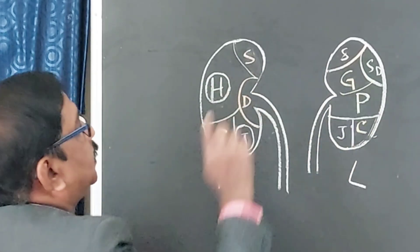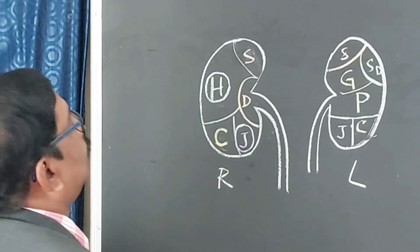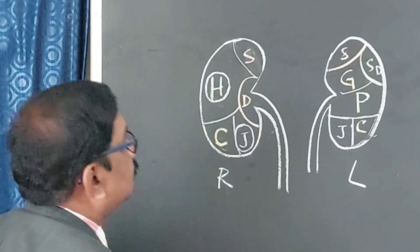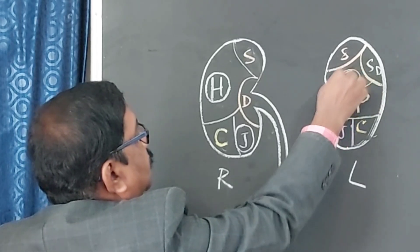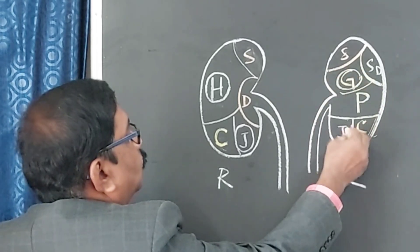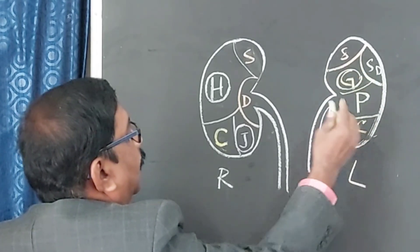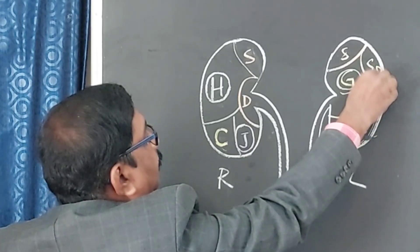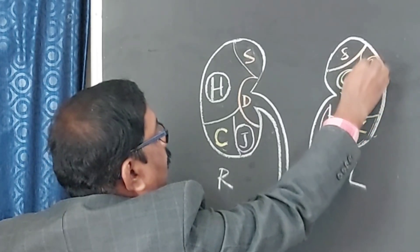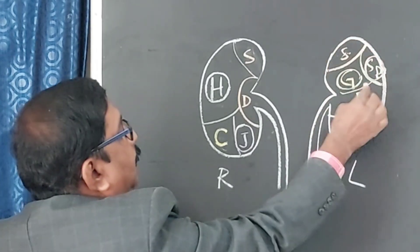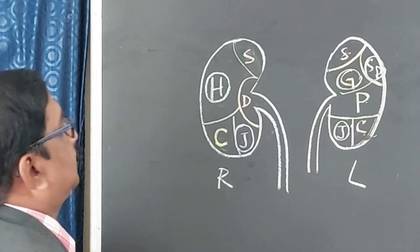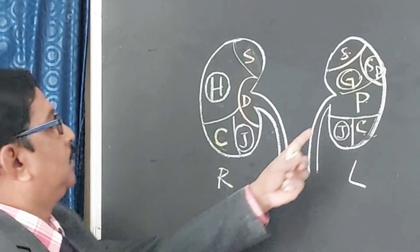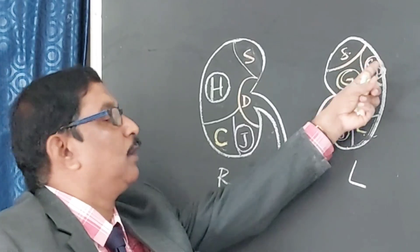Of the six viscera on the left side, three are peritoneal. The peritoneal viscera are: number one — gastric, number two — jejunal, and number three — splenic. The remaining three — suprarenal, pancreas, and the left colic flexure — these three are non-peritoneal, and those three are peritoneal on the redder side.